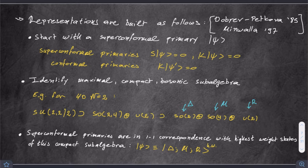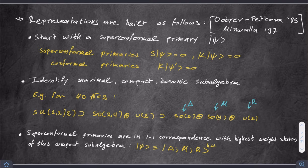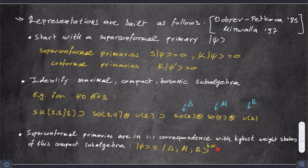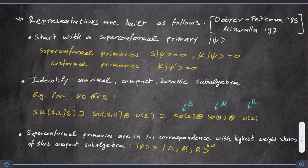These superconformal primaries are in one-to-one correspondence with the highest weight states of this maximal compact subalgebra. I can label psi by these quantum numbers: delta is one number, the highest weight label for the dilatation, M labels the Lorentz representation, and R labels the R-symmetry representation. Once you've done this, it is straightforward to complete the construction of your irreducible representation using the remaining operators: Q's and P's, since S's and K's already annihilate the primary.